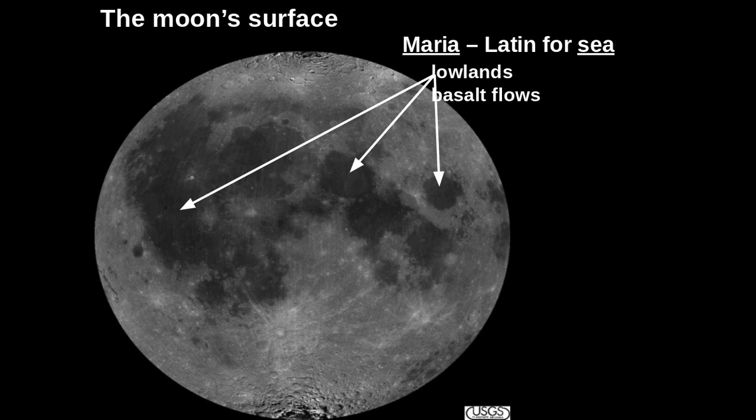Instead, those dark areas are known as the Maria — Latin for sea. The Maria represents basalt flows: a mafic-type, extrusive, igneous rock that is high in iron and magnesium, and is very dark-colored. It's the most common volcanic rock on Earth. On the moon, the Maria are basins that filled up with basaltic lava flows from volcanism during the moon's formation, resulting in very smooth, flat surfaces. You can see where they're circular, meaning they probably filled up crater-type areas.